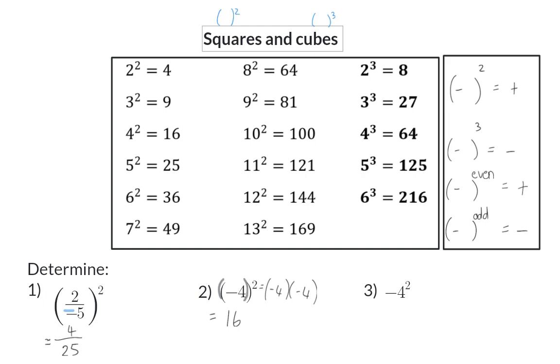In example 3, only the 4 is squared, and this means minus 4 times 4, which will give us minus 16.